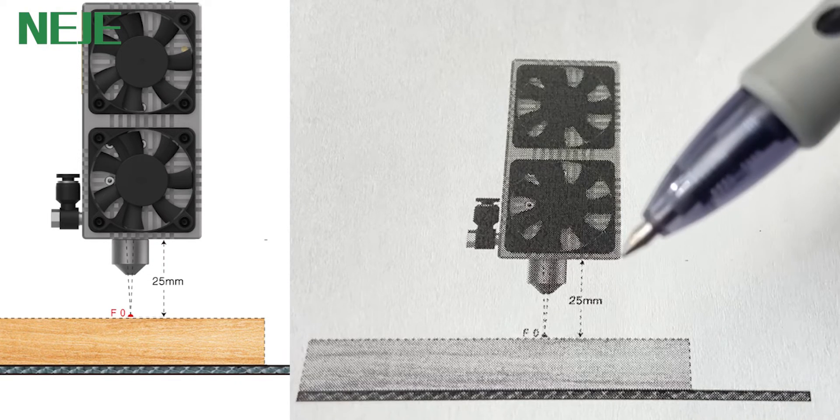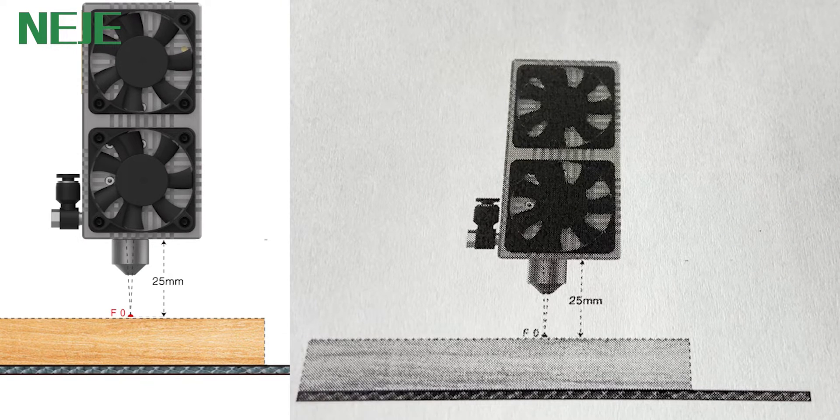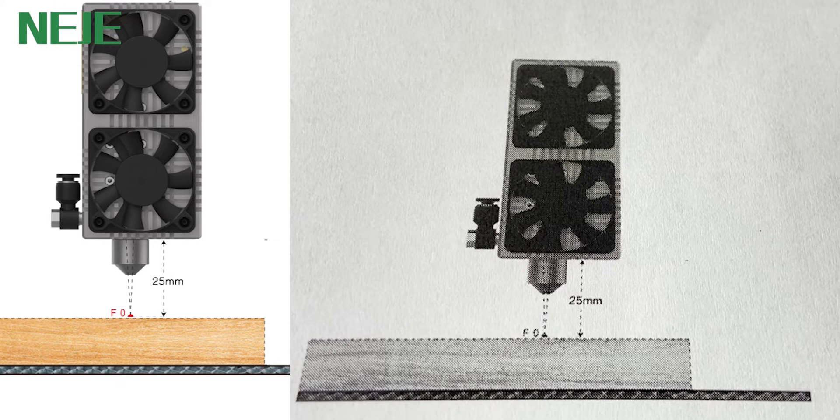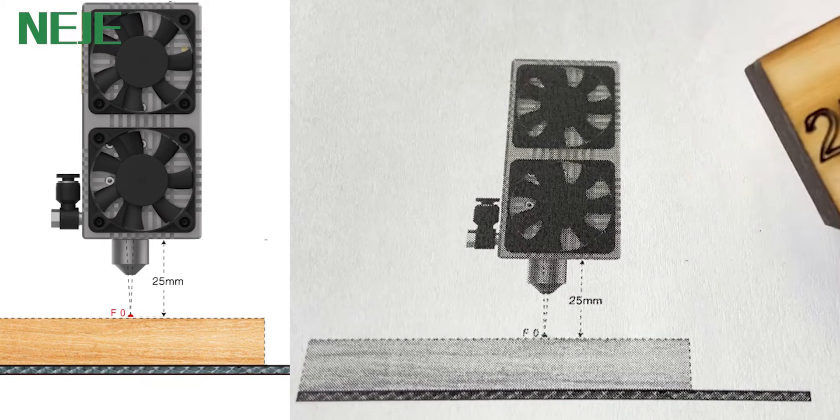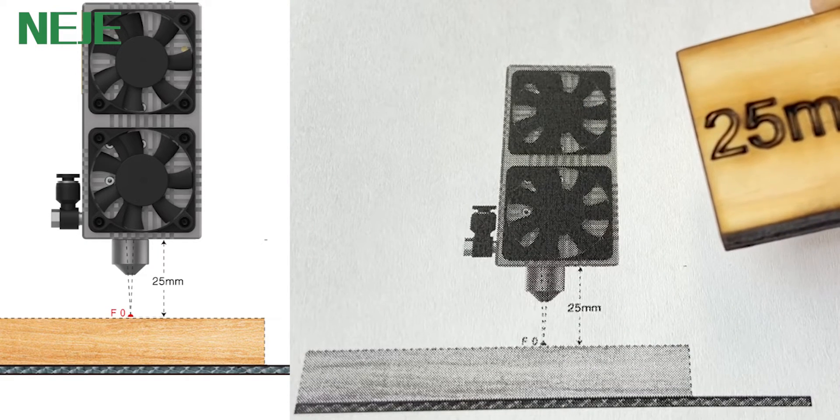As we all know, the focal length for E80 will be 25 millimeters. So if you want to make the focal point on the surface of the material, then you only need to get a 25 millimeter block. And every time before you engrave or cut,